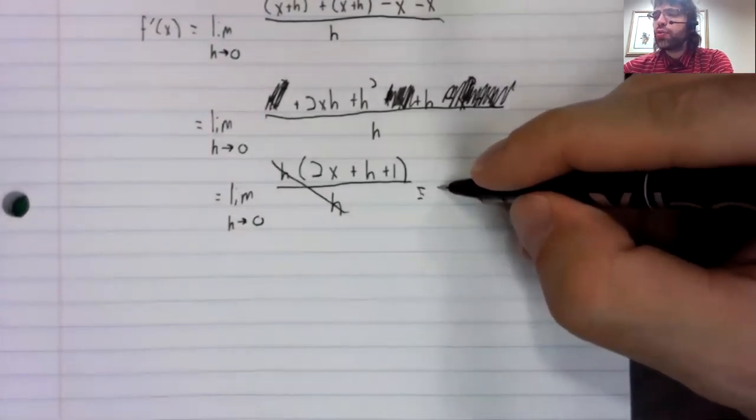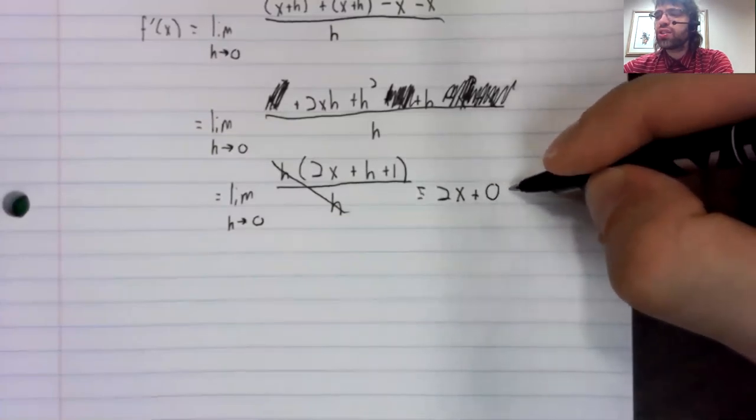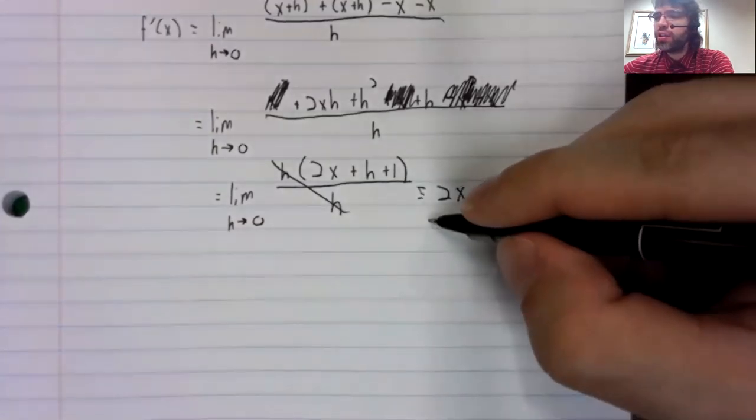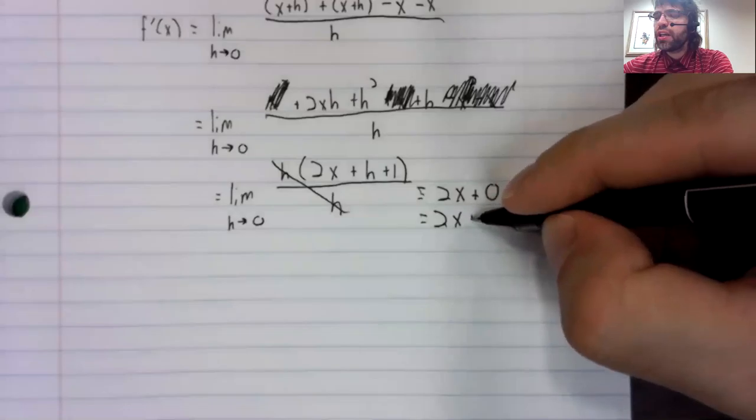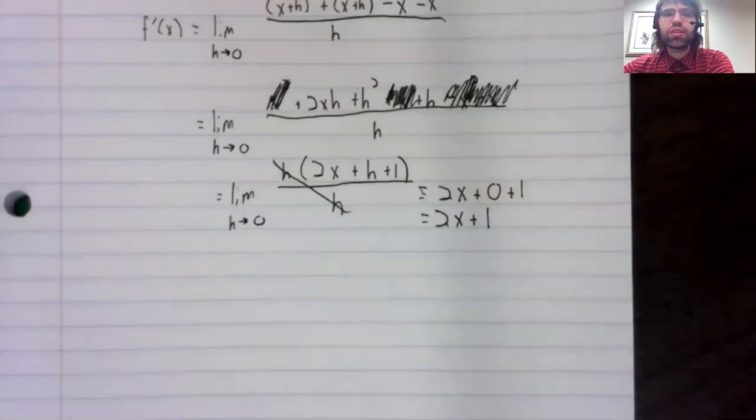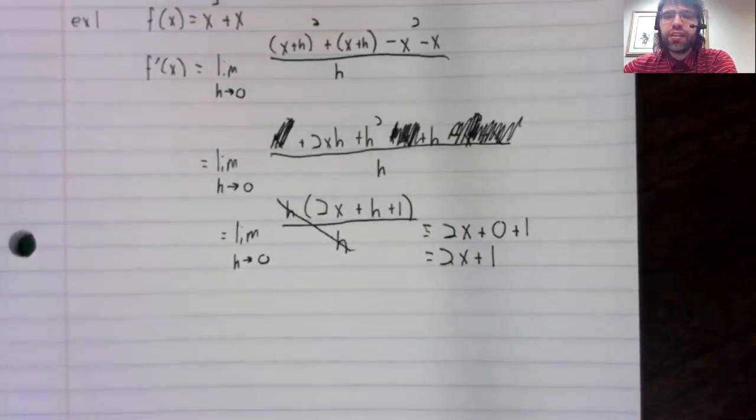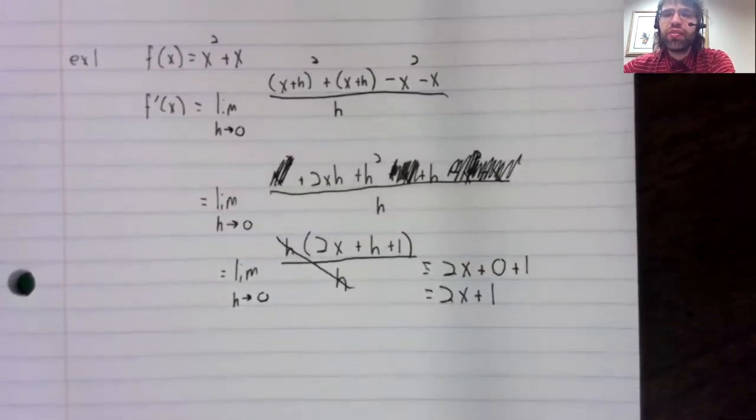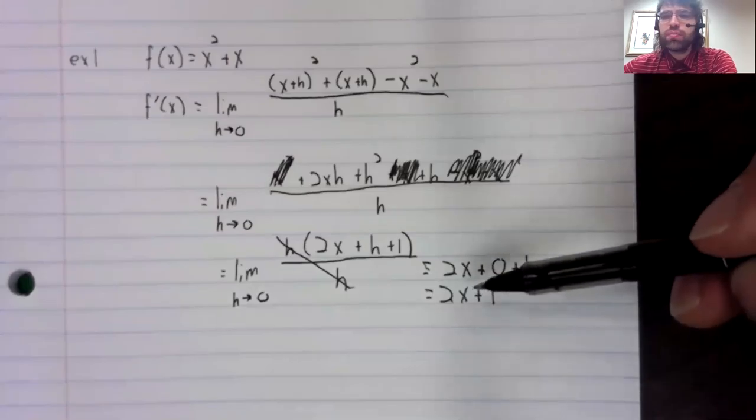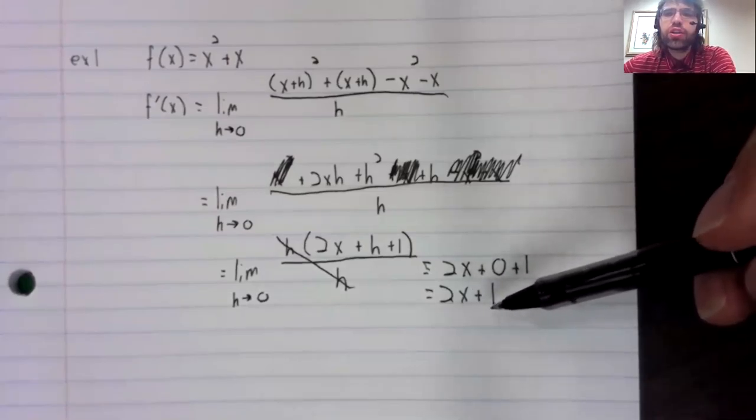And now we can use continuity. 2x plus zero, plus one. So the derivative is 2x plus one. And going back to the previous video where I tried to emphasize that the derivative of a function is a function. Of course, 2x plus one is a function.